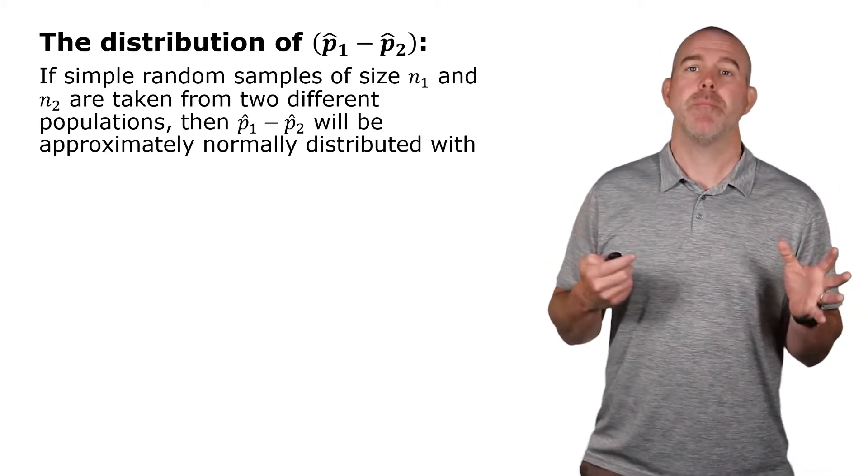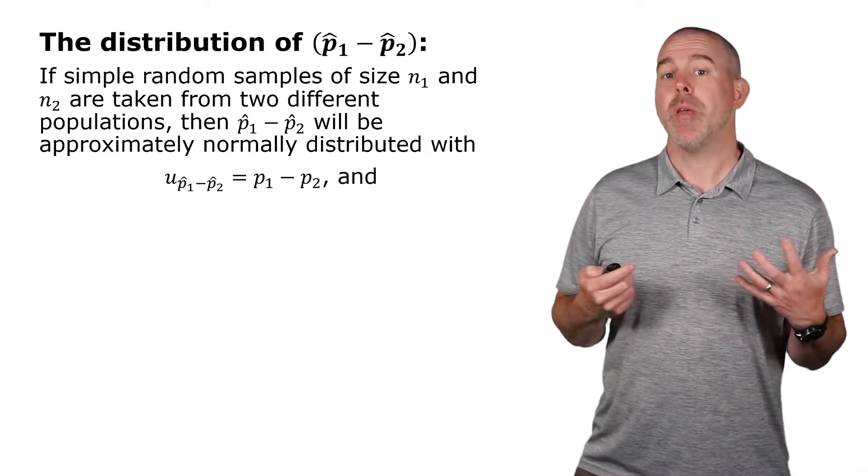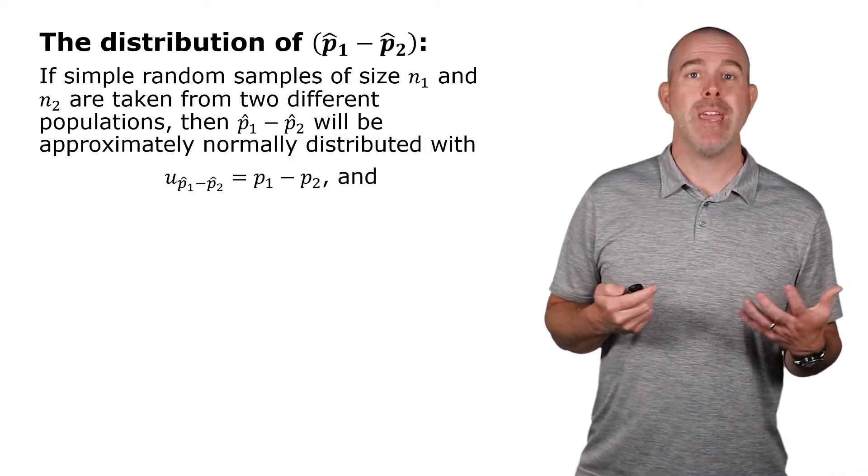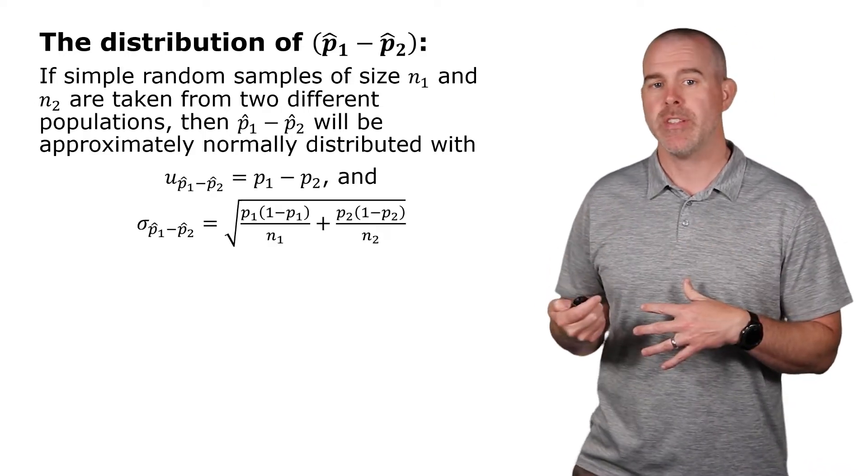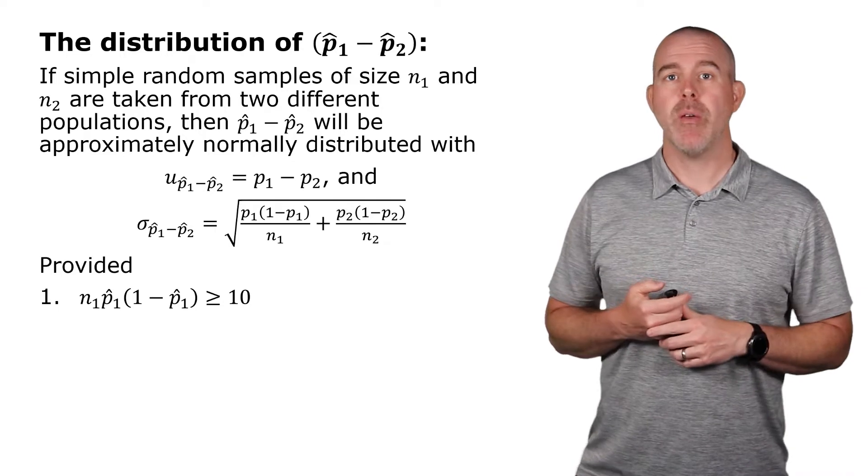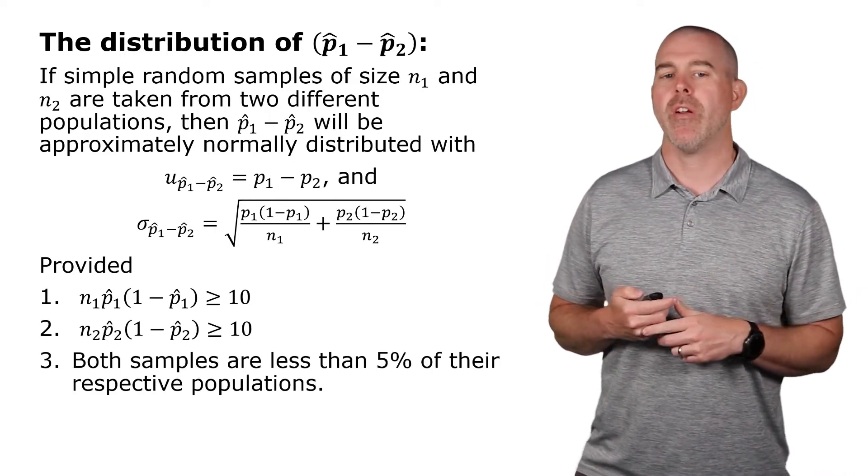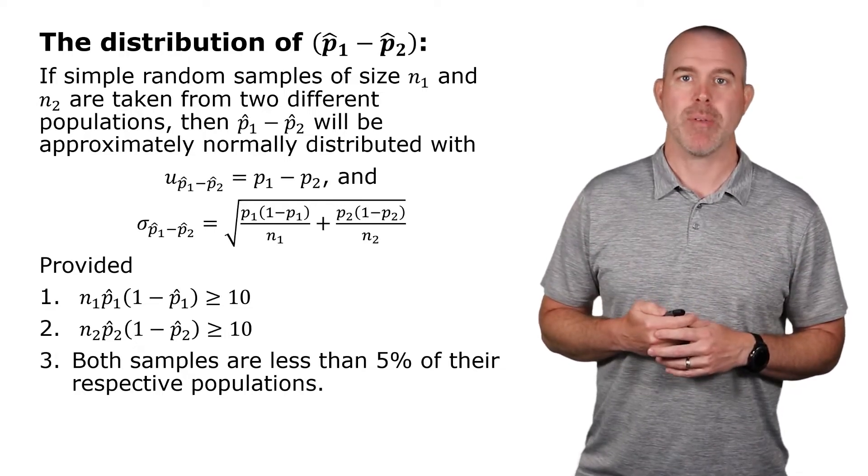Here's the criteria. If we take simple random samples of size N1 and N2, the distribution will be approximately normal with the mean being the difference between the actual population proportions, provided that N1 times P1 hat times one minus P1 hat is at least 10, same thing for the second sample, and then both samples are less than 5% of their populations.